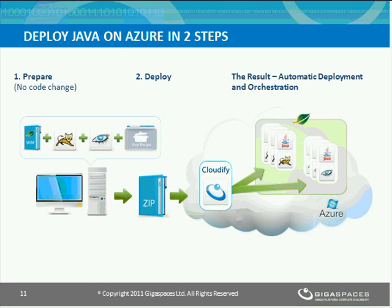The recipe tells the Cloudify environment how to package the application and gives instructions for things we would otherwise do manually — how to deploy and orchestrate them, both in pre-deployment and post-deployment. This includes the order of provisioning and instructions for how Cloudify should manage them in the case of a failure or scaling event.